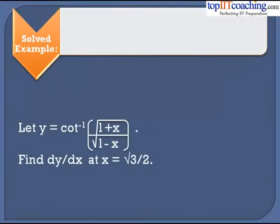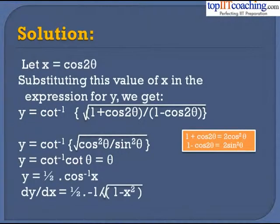Example: Let y = cot⁻¹(√((1+x)/(1−x))). Find dy/dx at x = √3/2. We substitute x = cos 2θ. This substitution will become more clear as we look at the solution further.